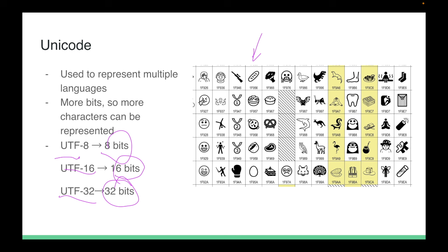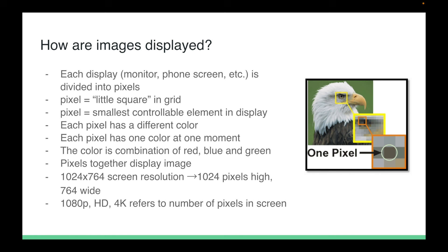Now we'll talk about how images are displayed. Each monitor or phone screen is divided into pixels — little squares. Your screen is basically a grid of little squares called pixels. Each pixel can be controlled to represent a specific color at a specific moment. An image is made up of many pixels each showing a different color. In a video, those pixels constantly change to represent each frame.